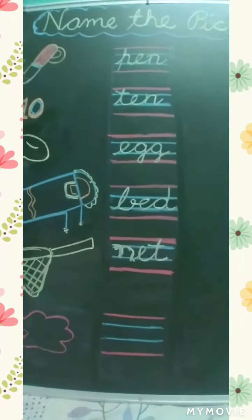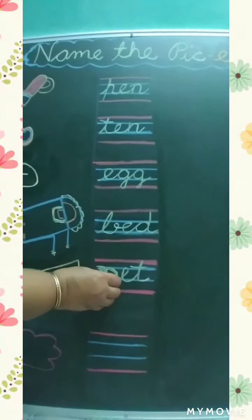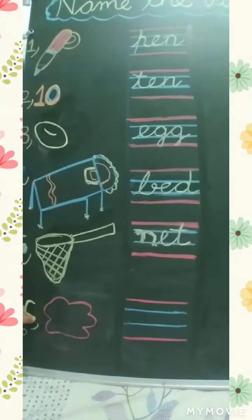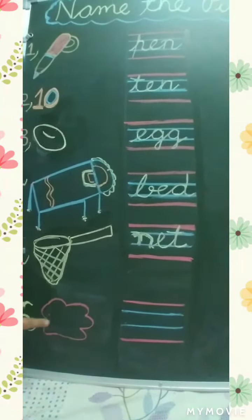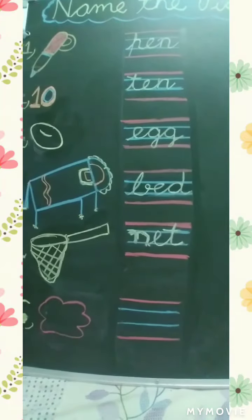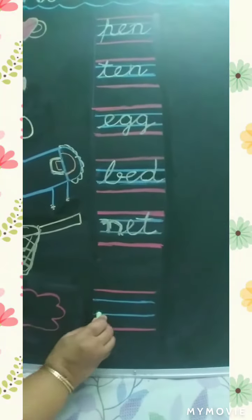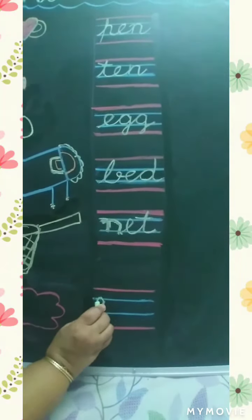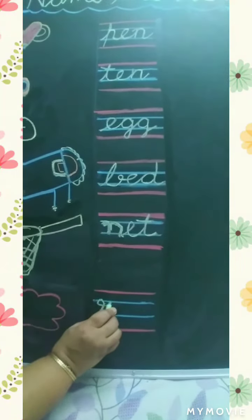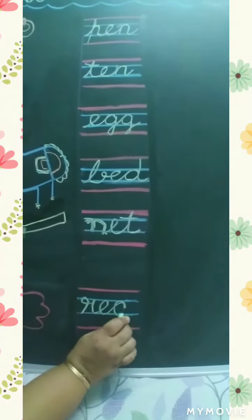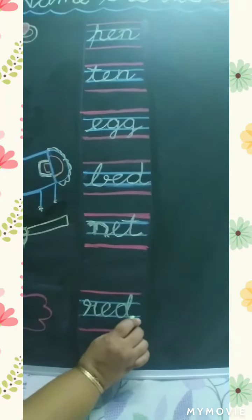Next picture is red. This is picture of red. Laal rang ko kya bolte hai? Red. R, E, D, red.